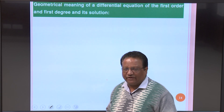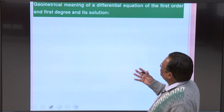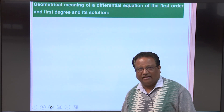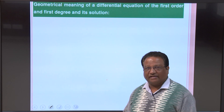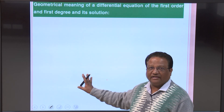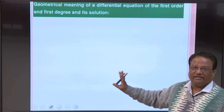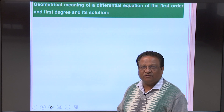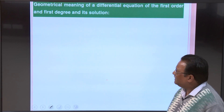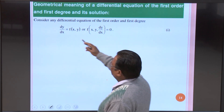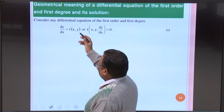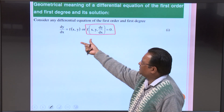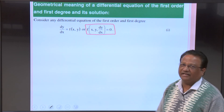Before formulating a differential equation, let us discuss the geometrical meaning of a first-order, first-degree differential equation and its solution. Any first-order, first-degree differential equation can be written as dy/dx = f(x, y), or equivalently as F(x, y, dy/dx) = 0. The direction of a curve at a particular point is determined by drawing the tangent line at that point — its slope is given by dy/dx at that point.